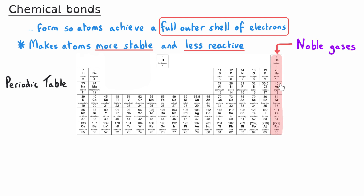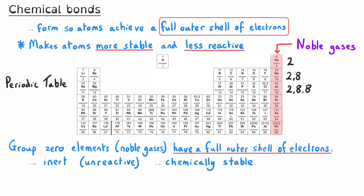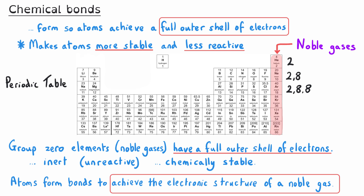Group zero is this column on the right-hand side. These elements have a full outer shell of electrons, which makes them chemically inert — in other words, unreactive and chemically stable. The other atoms in the periodic table react and form chemical bonds until they have the same electronic structure as one of the noble gas elements.